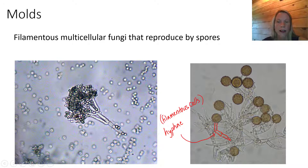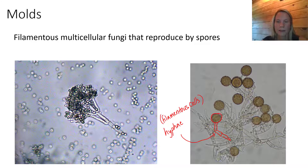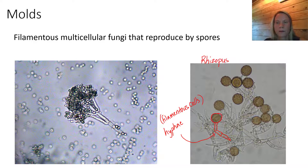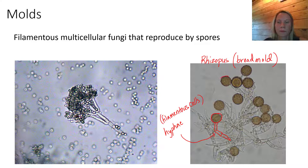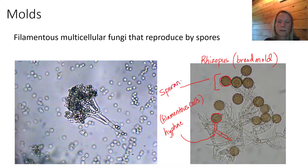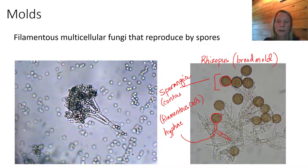These hyphae have little structures on the ends. These structures can vary depending on the species of mold. This is Rhizopus, commonly known as bread mold. These little pods - almost like little balls on the ends of the hyphae - are called sporangia. This structure is called a sporangia, and the sporangia actually contains the spores of the mold.